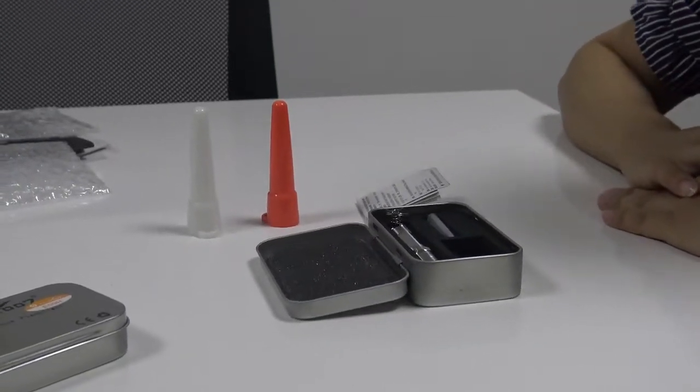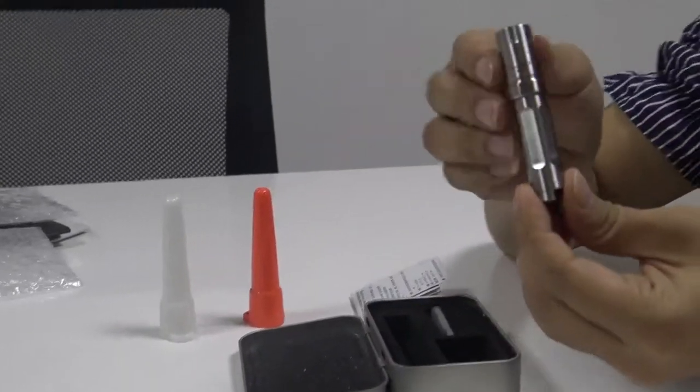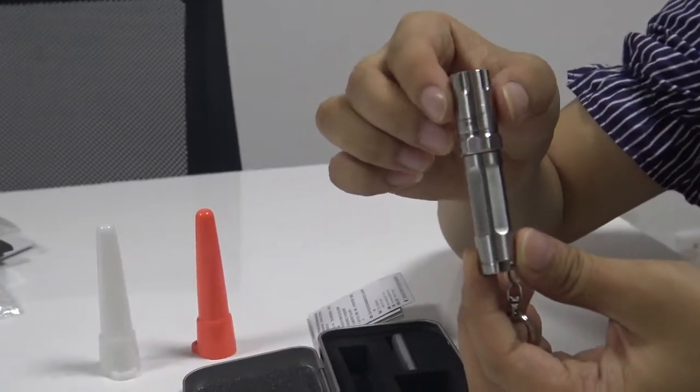Hi, here I would like to introduce Tenko 7 mini flashlight ES12. The whole body is made of stainless steel with very good touching.